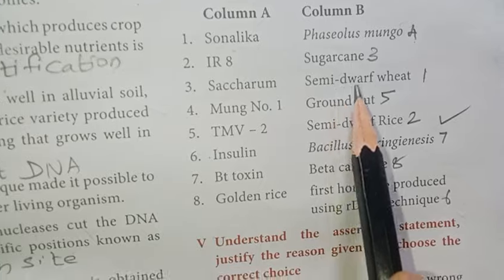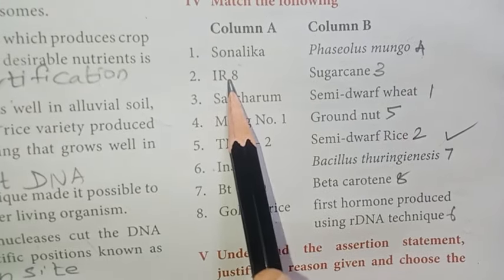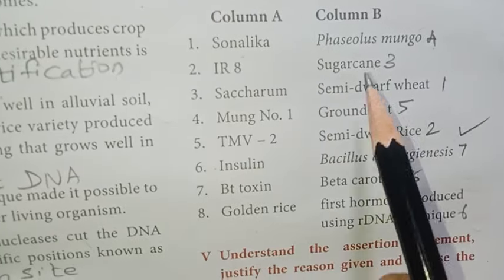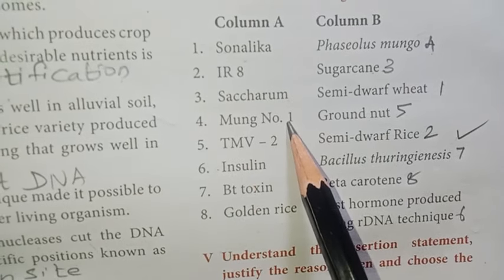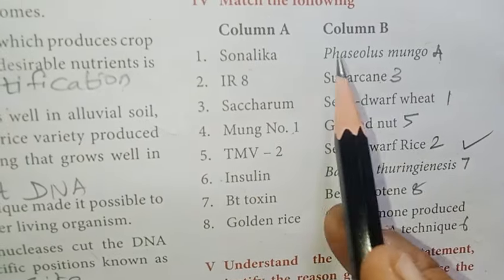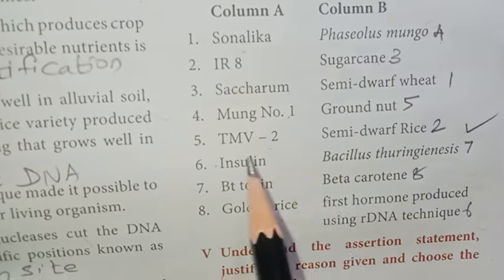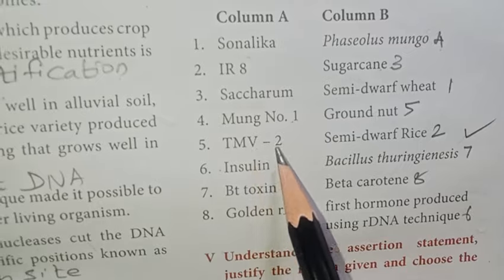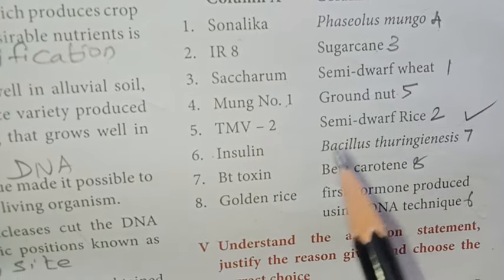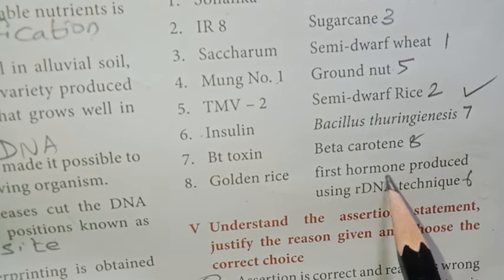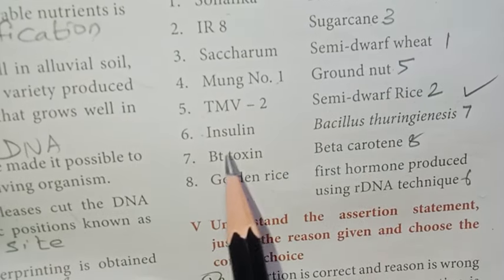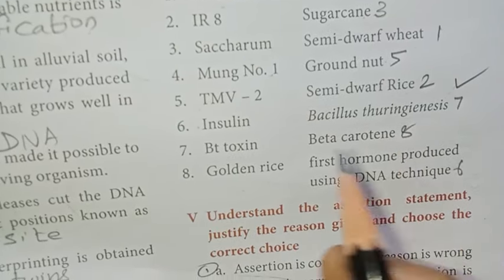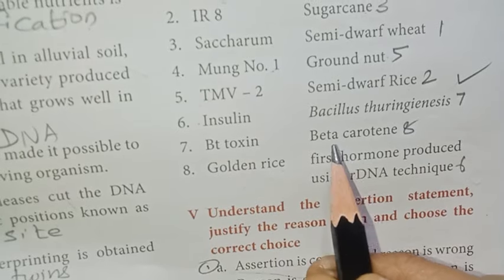Match the following. Sonalika — semi dwarf wheat. IR8 — semi dwarf rice. Sacrum — sugarcane. Moong no.1 — Phaseolus mungo. Tmb2 — groundnut. Insulin — first hormone produced using recombinant DNA technique. Bt toxin — Bacillus thuringiensis. Golden rice — beta carotene.